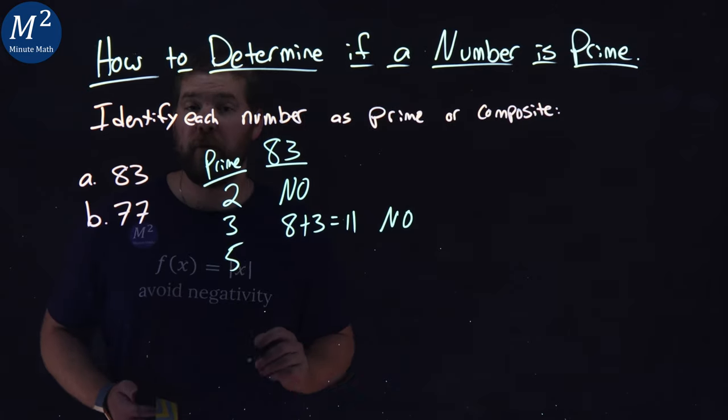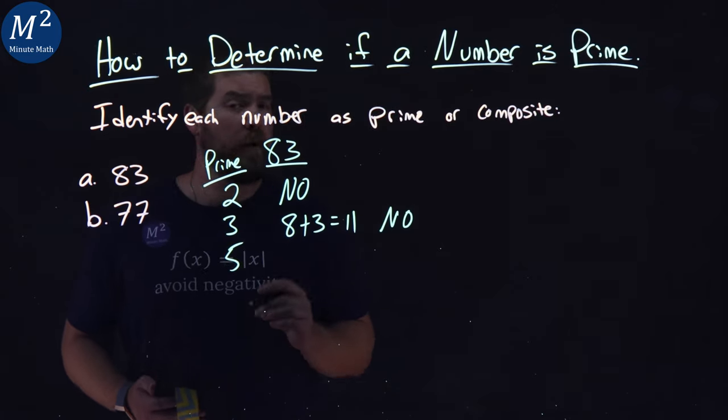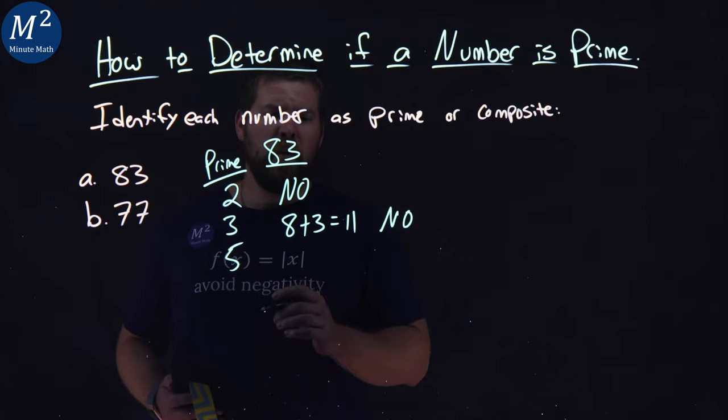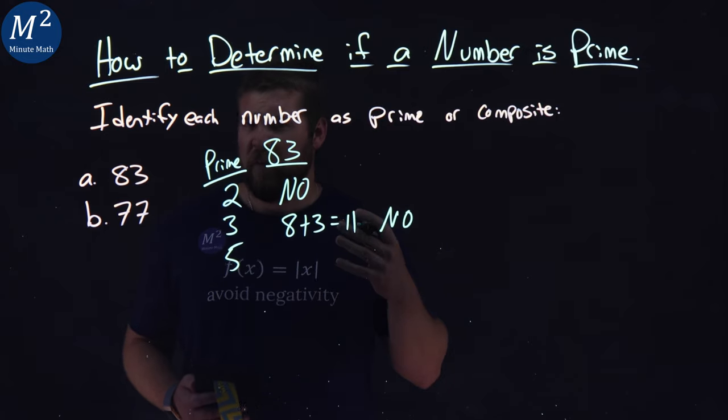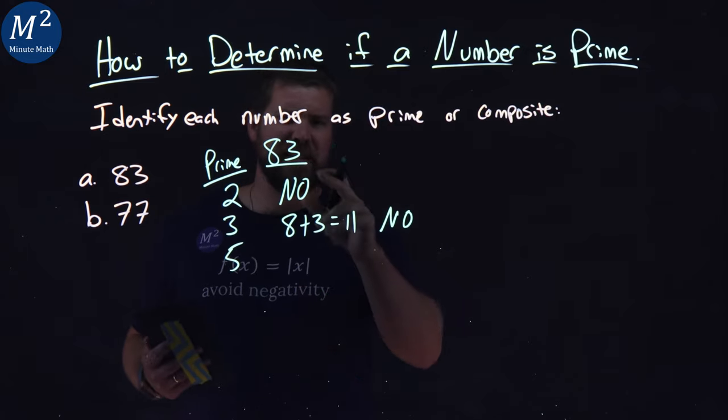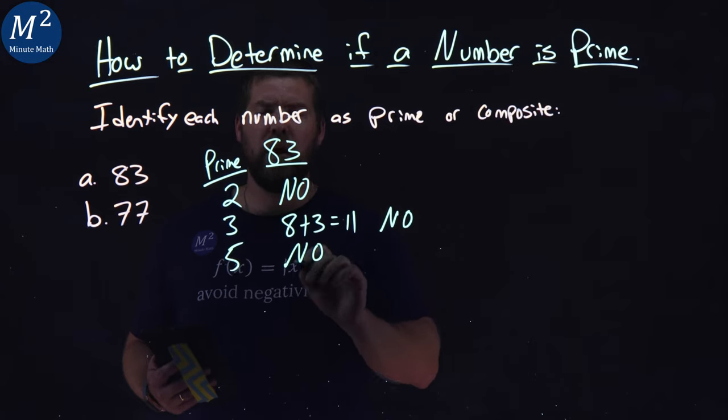Our next prime number is 5. Does 5 go into 83? Well, does it end in a 0 or a 5? It doesn't. It ends in a 3. So no. Pretty easy.